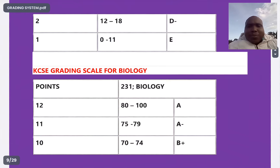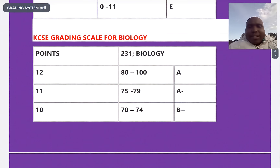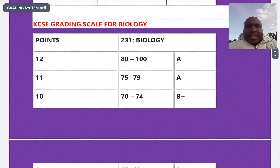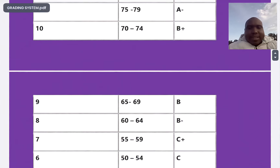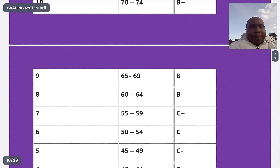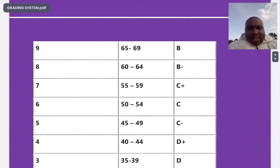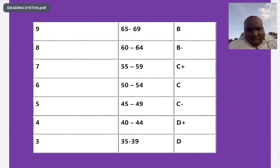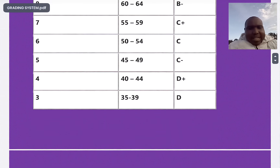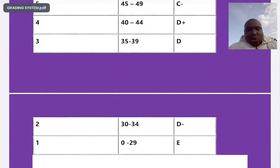For biology: 80 to 100 is A, 75 to 79 is A minus, 70 to 74 is B plus, 65 to 69 is B plain, 60 to 64 is B minus, 55 to 59 is C plus, 50 to 54 is C plain, 45 to 49 is C minus, 40 to 44 is D plus, 35 to 39 is D plain, 30 to 34 is D minus, and 0 to 29 is an E in biology.